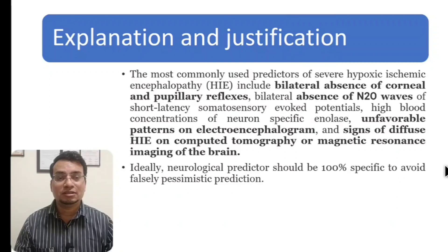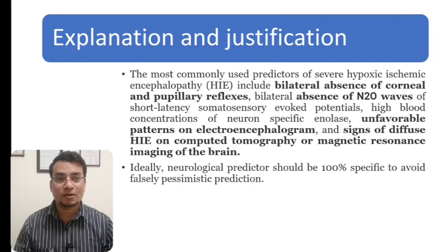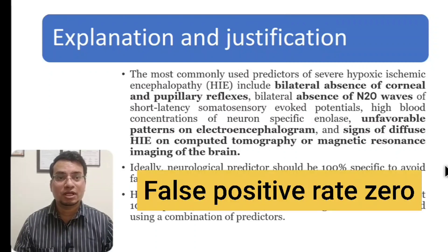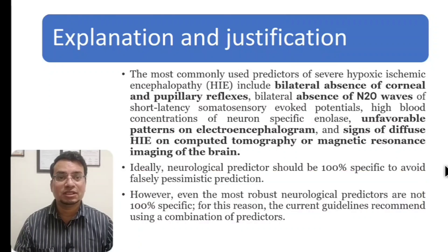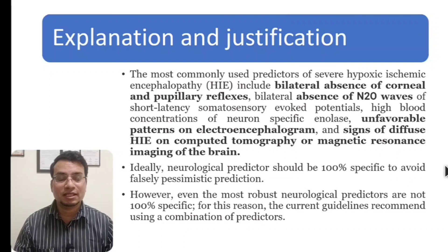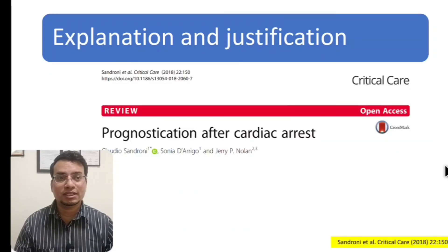Ideally, a neurological predictor should be 100% specific to avoid falsely pessimistic predictions. It should not be the case that you perform one test and decide the patient is brain dead — that would be wrong. However, with the most robust neurological predictors we perform, none are 100% specific, and for this reason current guidelines recommend multimodal evaluation of neuroprognostication. A combination of predictors is advised.